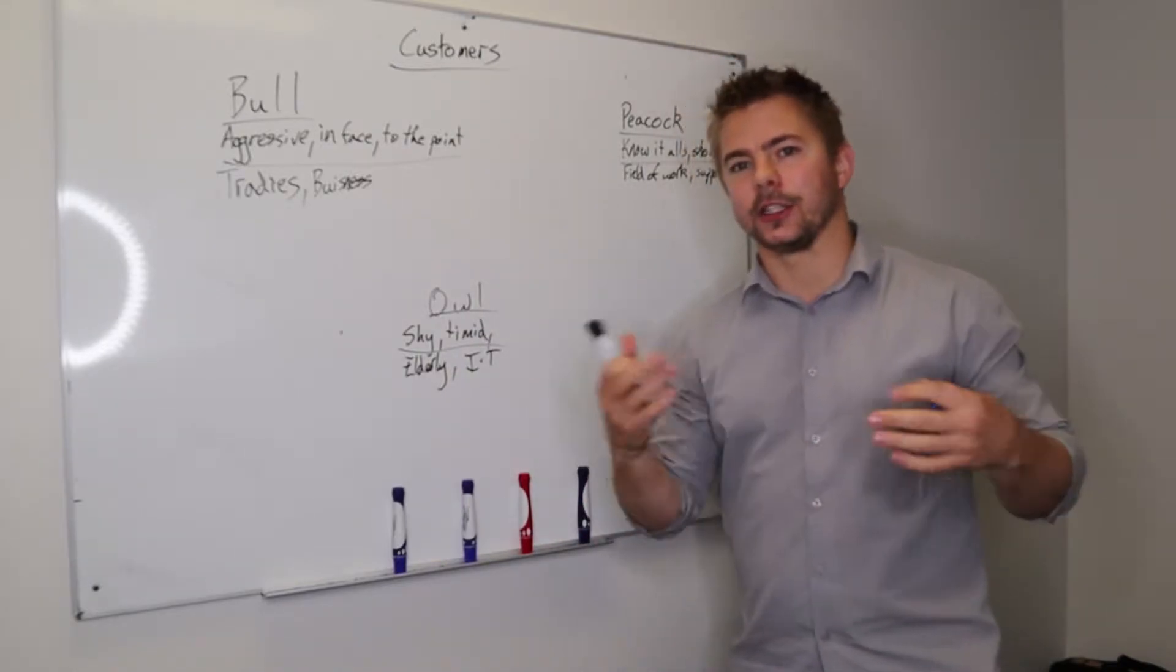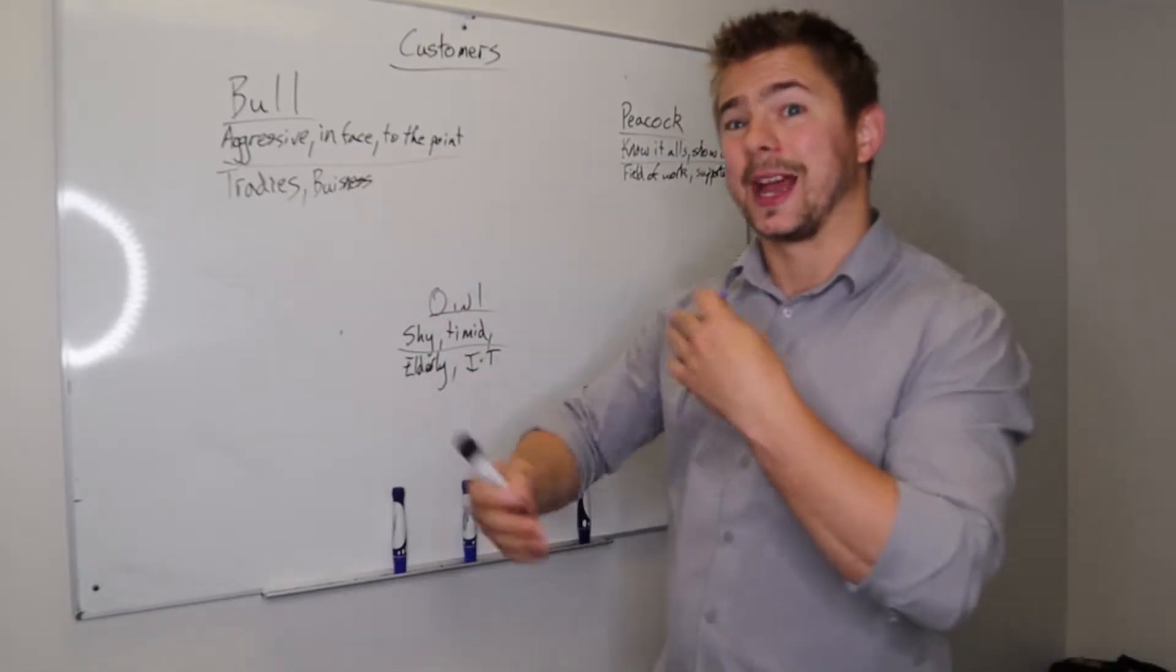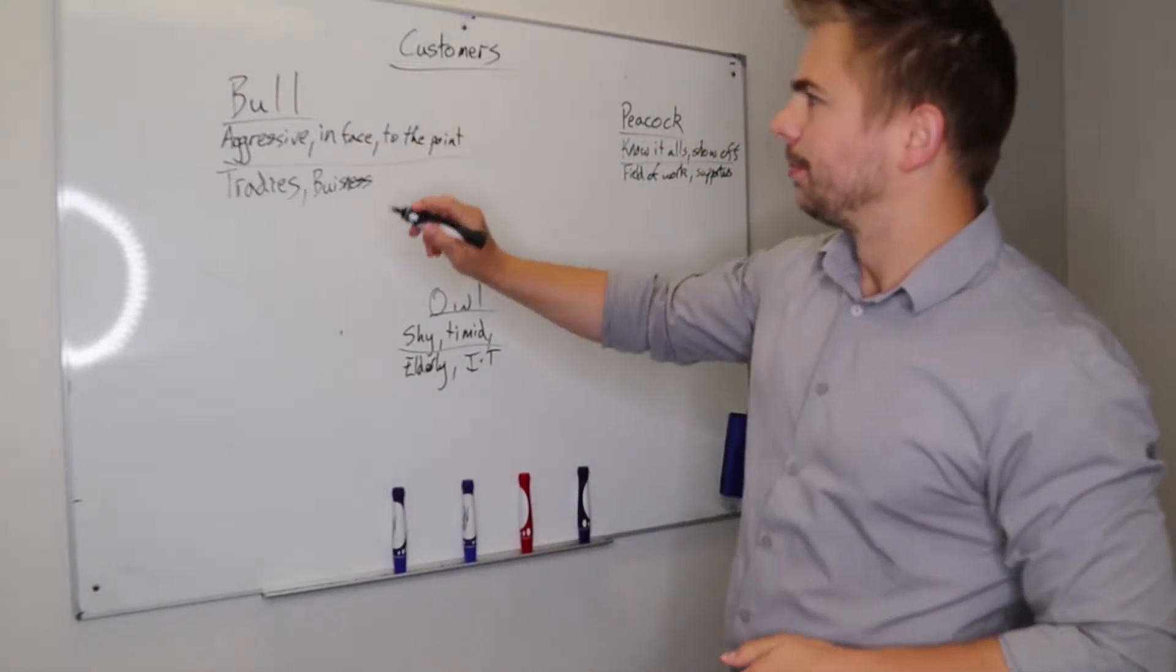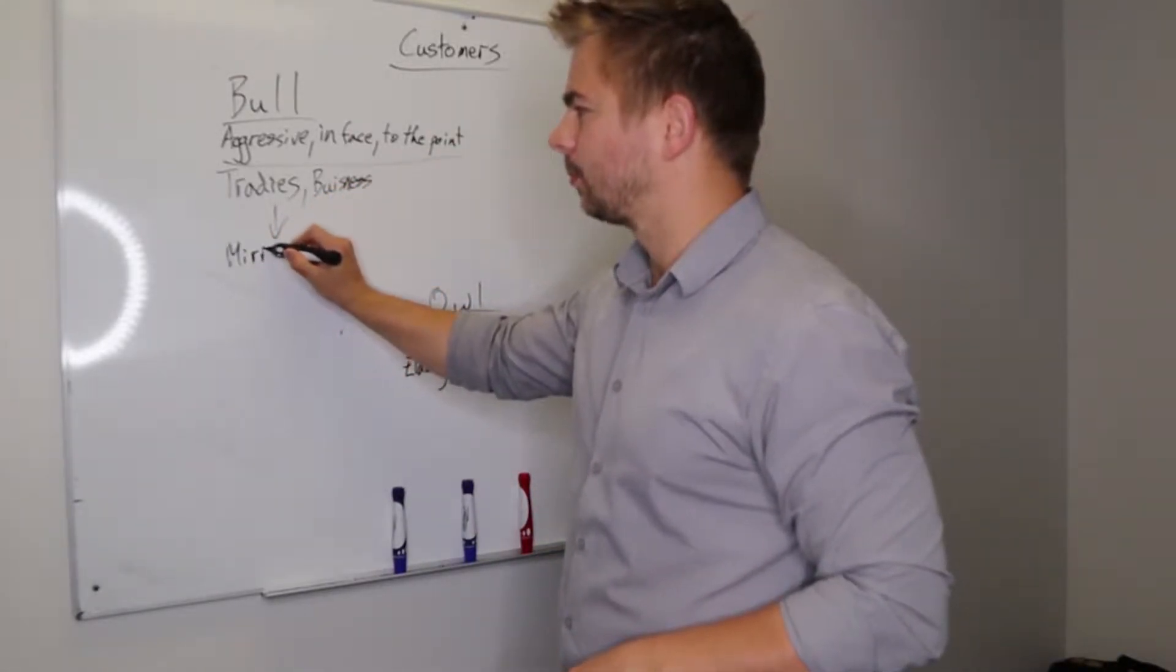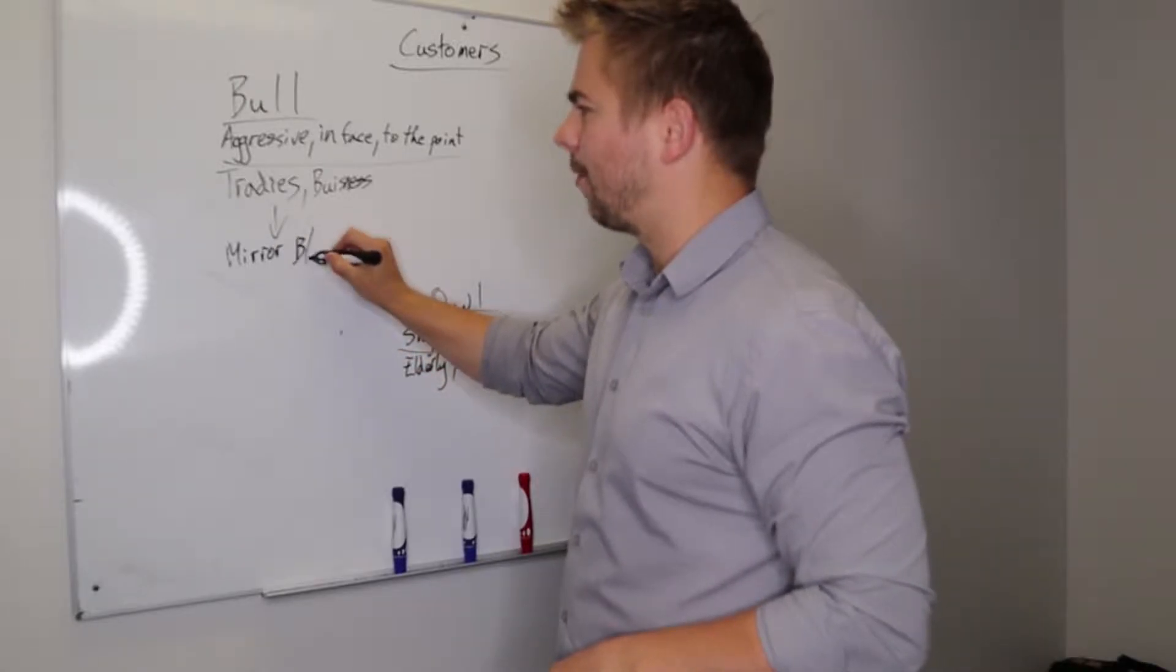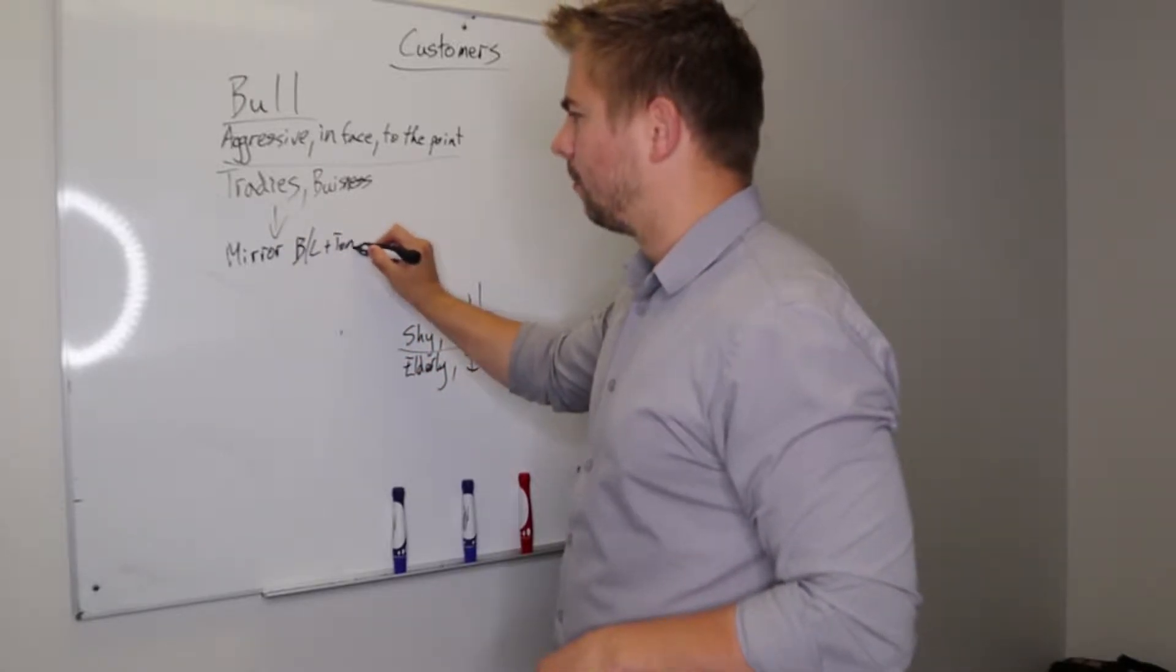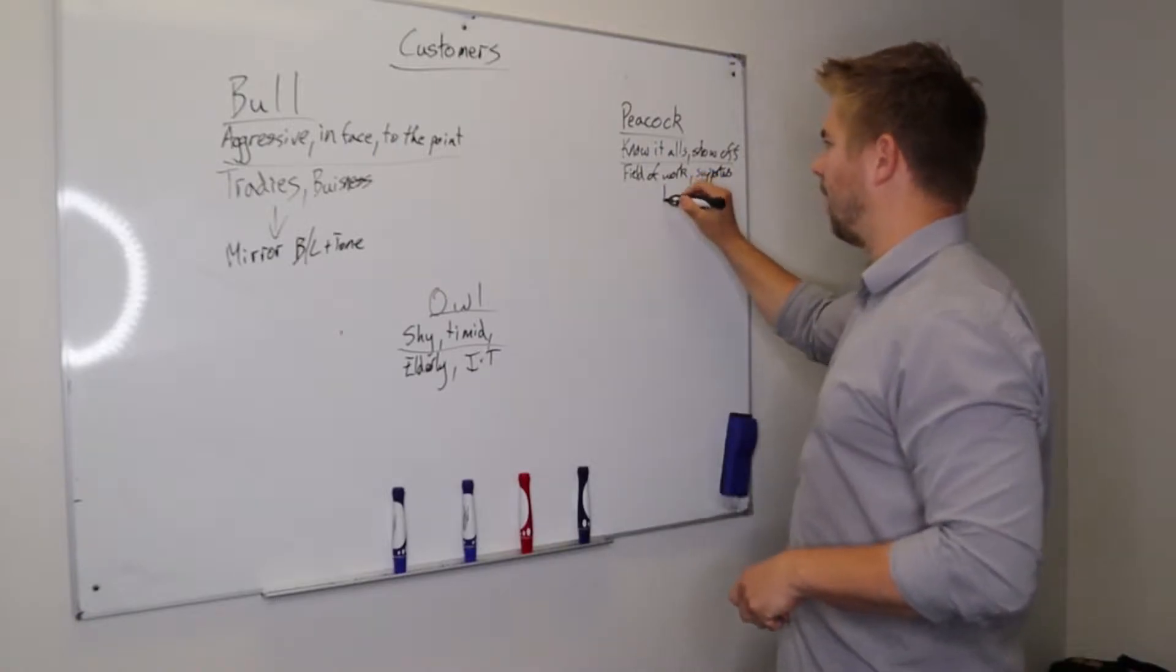So adapting and relating, though, is not just talking about which customers they are, it's how to adapt and relate to that customer. So how we can adapt and relate to bulls is by mirroring them. Mirror their body language and their tonality. This is actually going to fall under every single one.